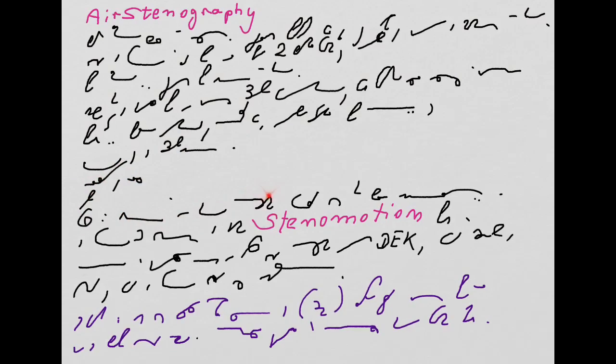Airstenography is a body shorthand system whose syntax can be developed in an online community on YouTube. The poster had coined the term Stenomotion for it.